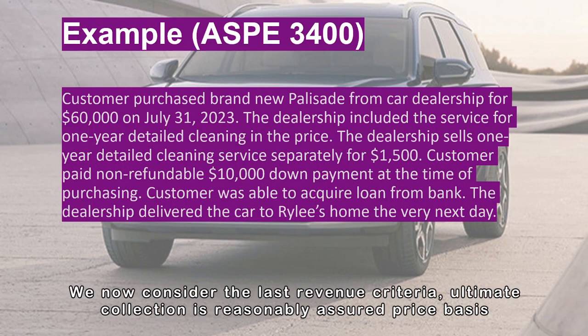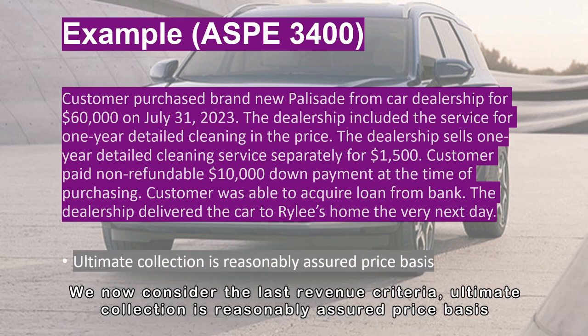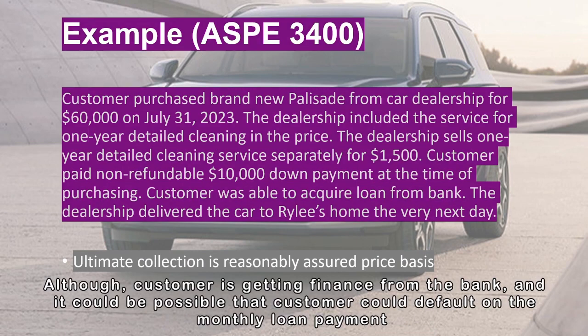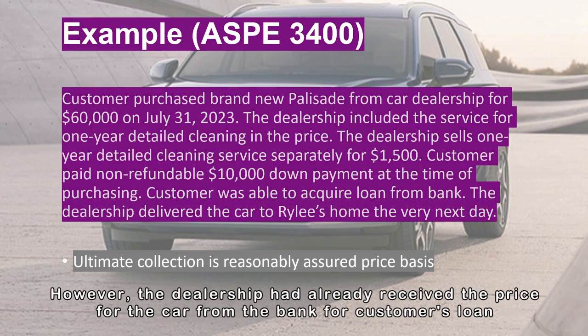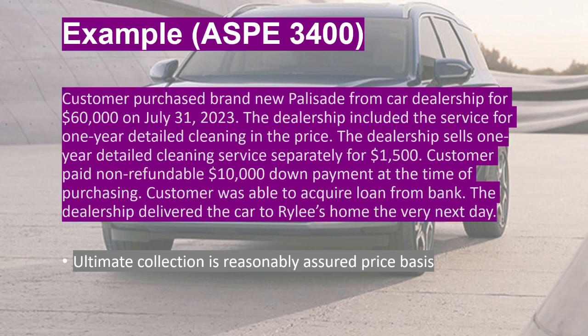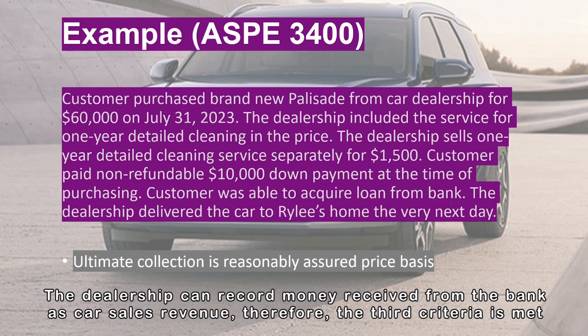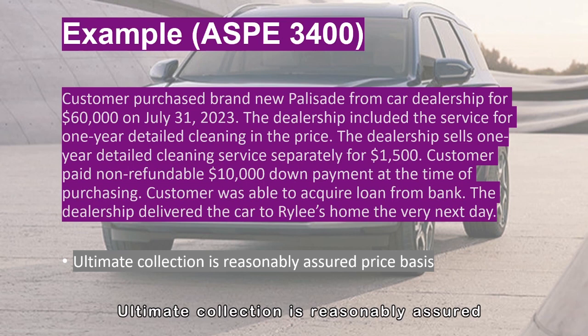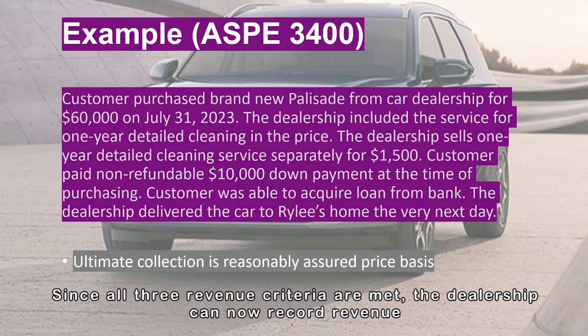We now consider the last revenue criteria: ultimate collection is reasonably assured. Although the customer is getting financing from the bank, and it could be possible that the customer could default on the monthly loan payment, the dealership had already received the price for the car from the bank for the customer's loan. The dealership can record the money received from the bank as car sales revenue. Therefore, the third criteria is met — ultimate collection is reasonably assured. Since all three revenue criteria are met, the dealership can now record revenue.